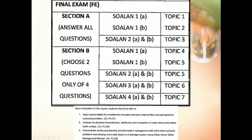Here are the final exam topics for each question. There will be two sections, Section A and Section B. Section A is answer all questions, covering topics 1, 2 and 3, and you are compulsory to answer every question in Section A. For Section B, you only choose two questions out of four questions. This is the suggested question structure and it might be changed every semester.